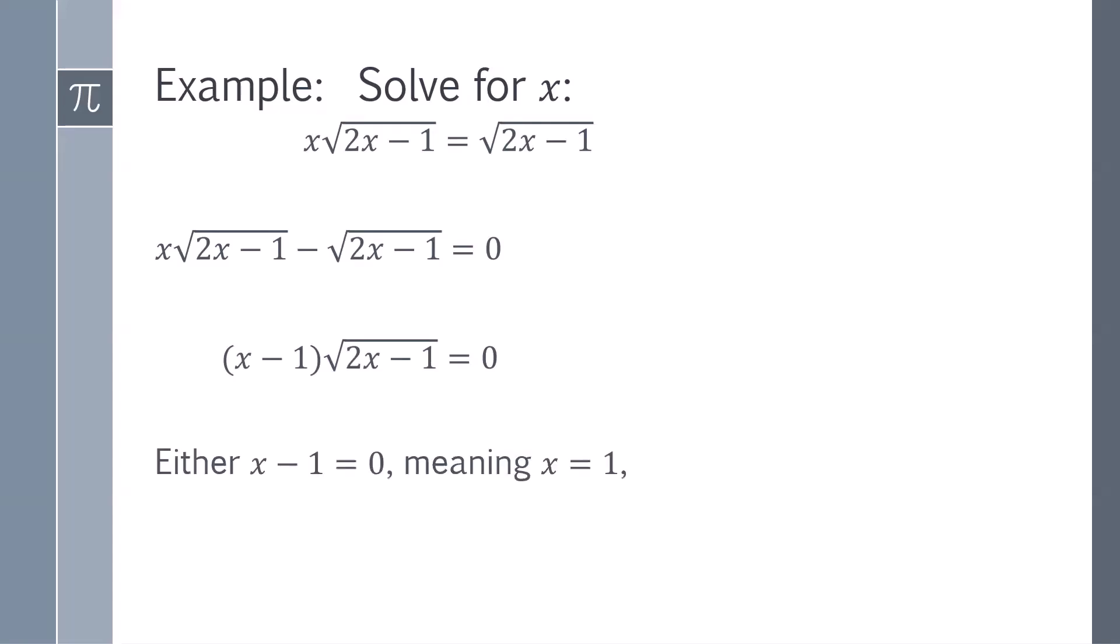And so either x - 1 is 0, which means that x equals 1, or √(2x - 1) equals 0, meaning x is 1/2. So x is either 1 or 1/2.